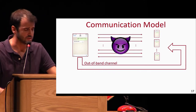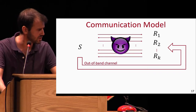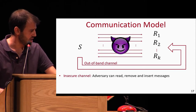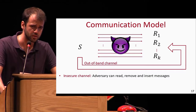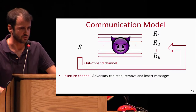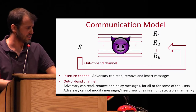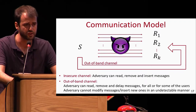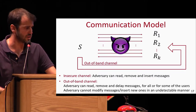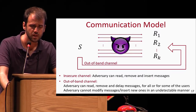In the communication model, we have a sender S and receivers R1 through RK. Users communicate over an insecure channel over which the adversary has complete control — she can read messages, change them, delay them, insert new ones, et cetera. In addition, S has the ability to out-of-band authenticate one short value over an out-of-band channel. This channel is authenticated but not secret: the adversary can read, delete, or delay messages, but cannot modify them or insert new ones in an undetectable manner.